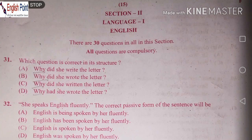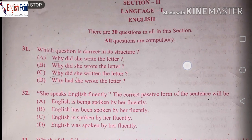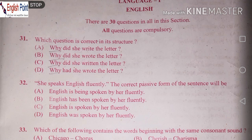Question number 31: Which question is correct in its structure? Option A: Why did C write the letter? Option B: Why did C write the letter? Option C: Why did C write the letter? Option D: Why had C write the letter? A, B, C are three simple sentences.